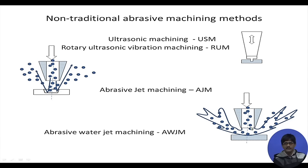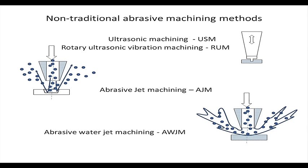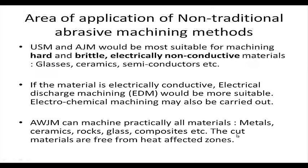If gas can carry abrasive particles, liquids can carry them and accelerate them to even higher speeds — that is abrasive water jet machining. Water confined in a pressurized chamber can be accelerated to speeds of around 1,000 meters per second upon release. When mixed with abrasives, the speed comes down slightly to around 800–900 meters per second, capable of removing practically any material.